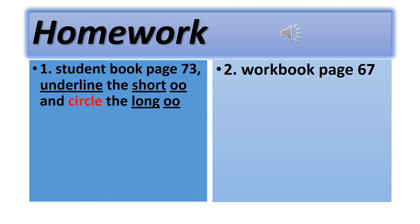Homework. Number one: Go to your student book, page 73. When you see a word with the short OO sound, please underline it, like 'foot'. When you see a word with the long OO sound, please circle it, like 'zoo'. Number two: Workbook page 67.